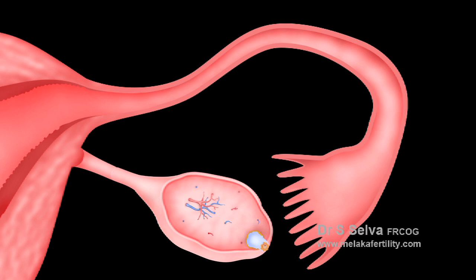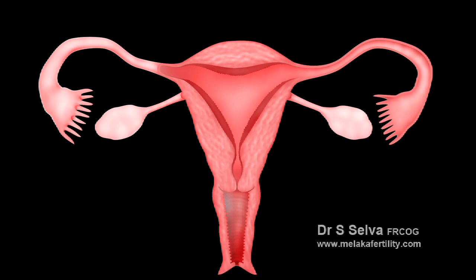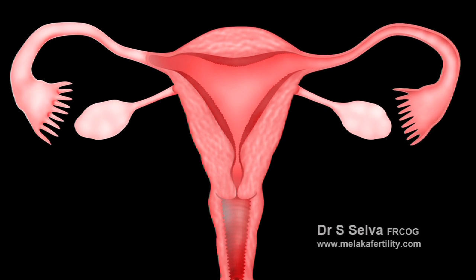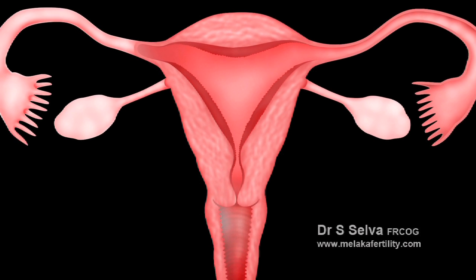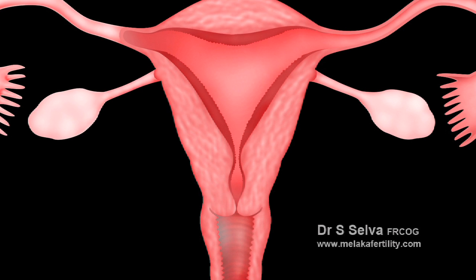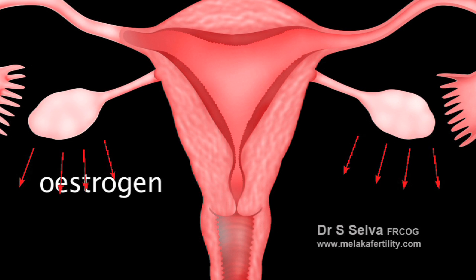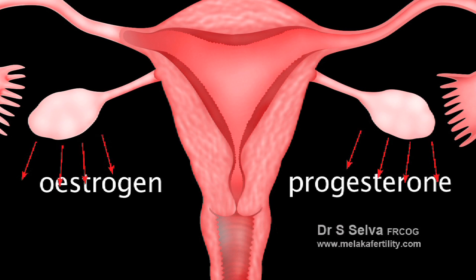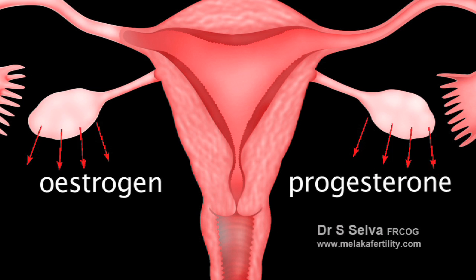Every month, one of the ovaries releases a mature egg into its neighbouring fallopian tube. In addition to producing eggs, the ovaries produce two main female sex hormones, oestrogen and progesterone, which are vital in regulating menstrual cycles.